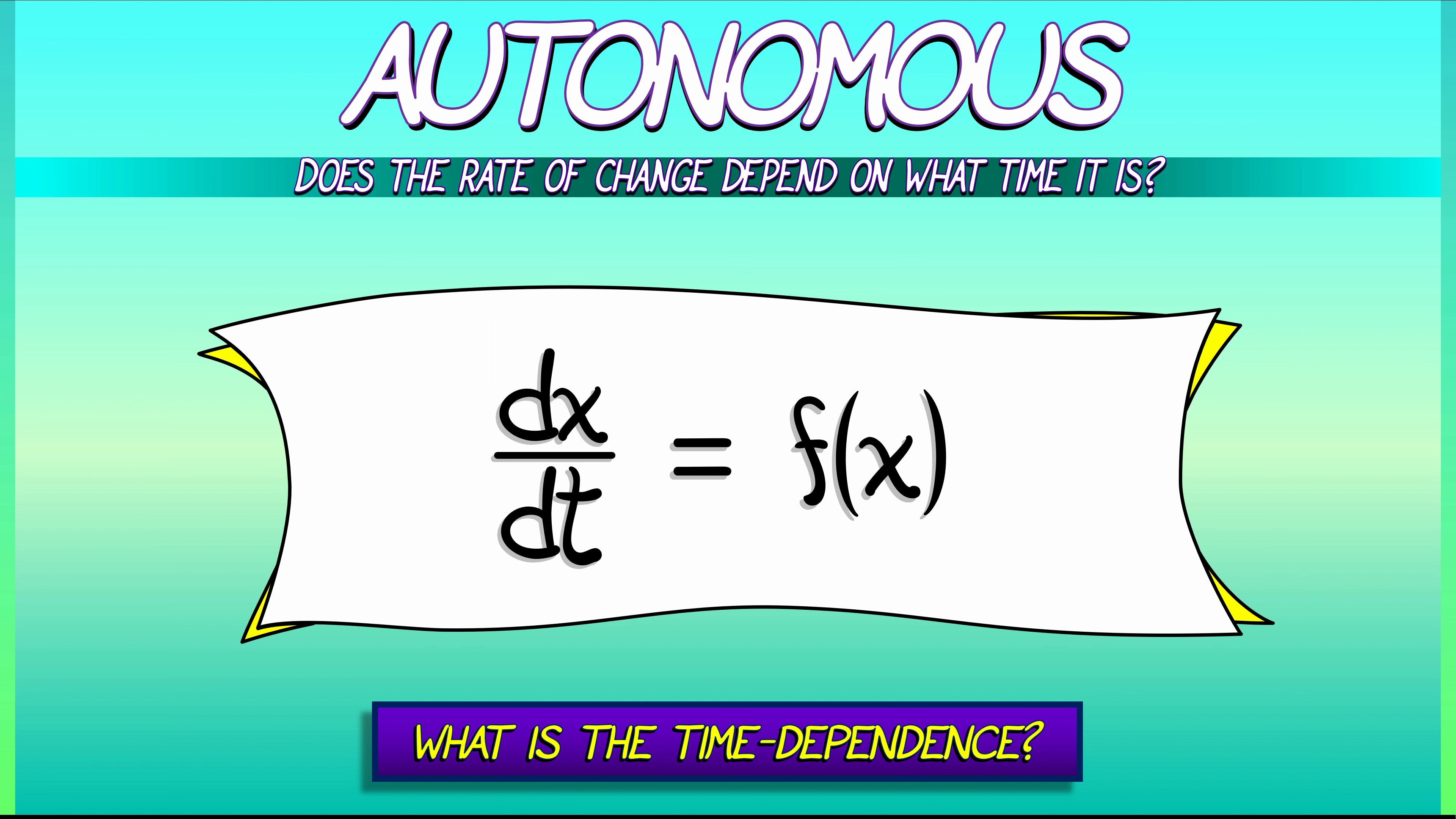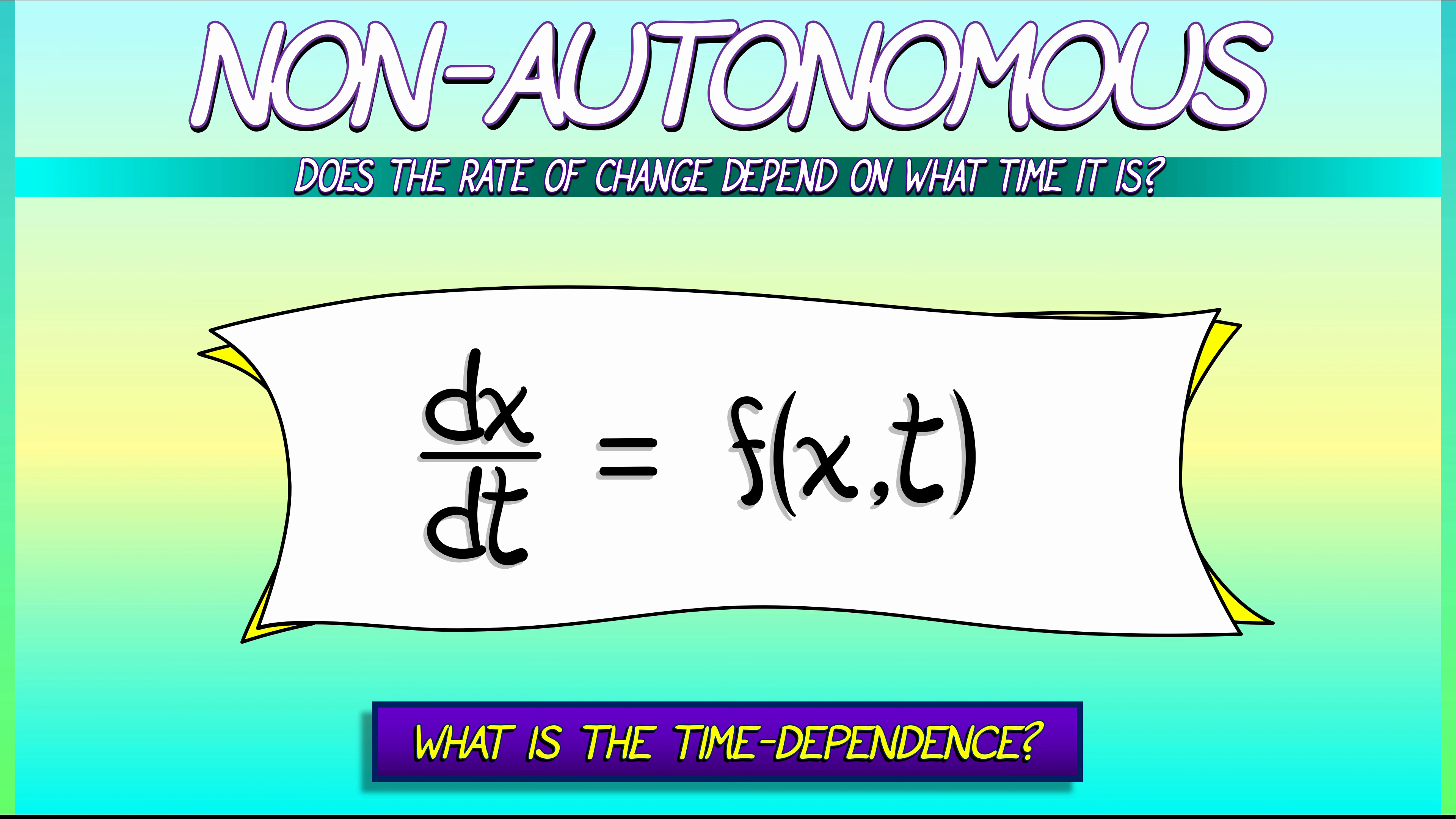But there are other differential equations, non-autonomous differential equations, in which both dependent and independent variables appear on the right-hand side of the equation. So dx/dt equals f of x and t. Now, how do we solve that? Well, in general, we don't. But there is a general case of equations,